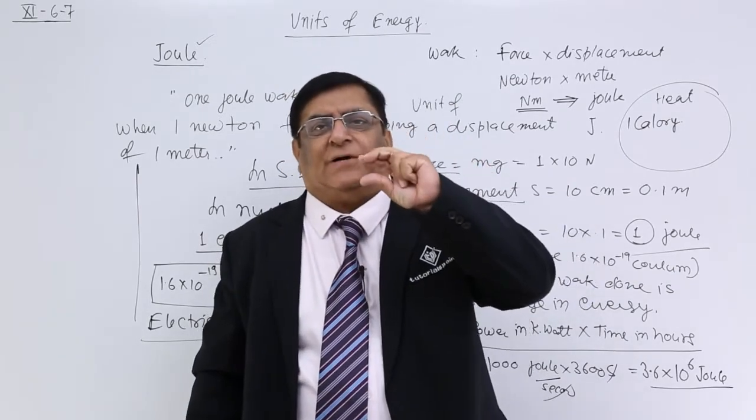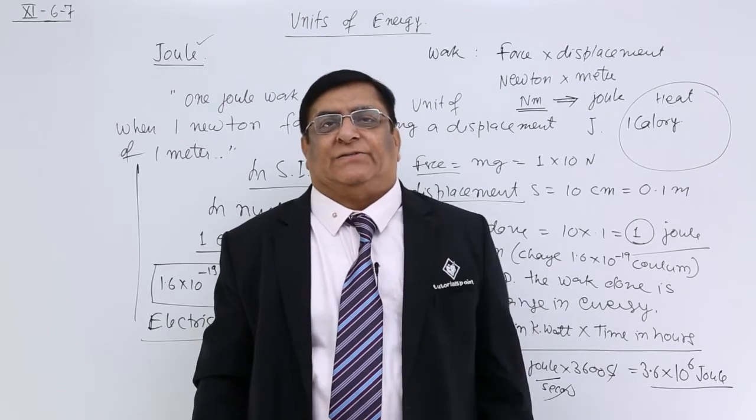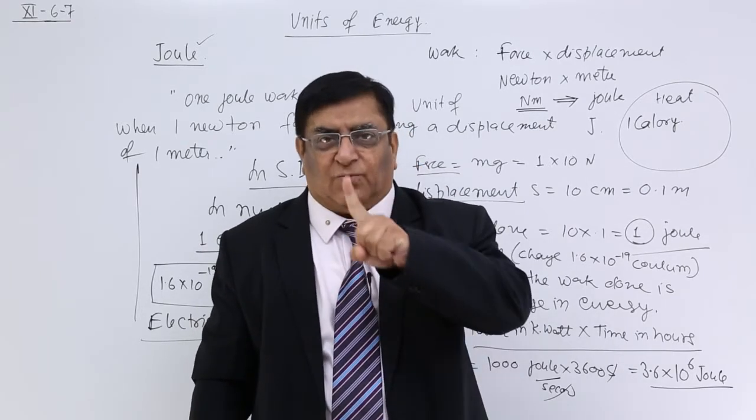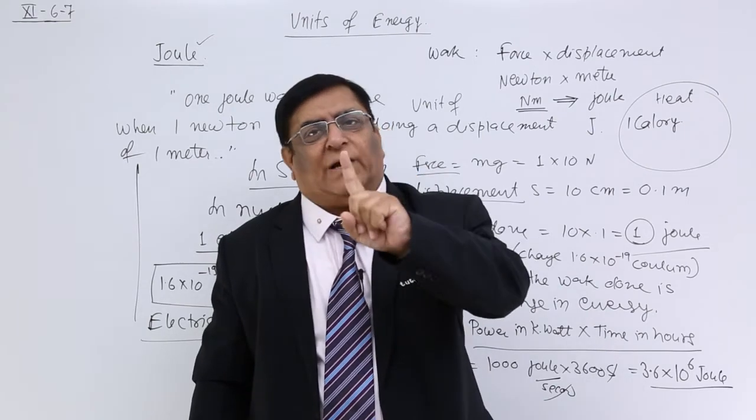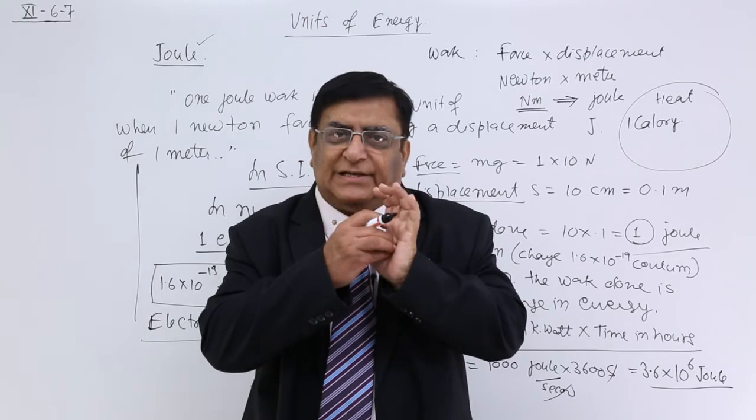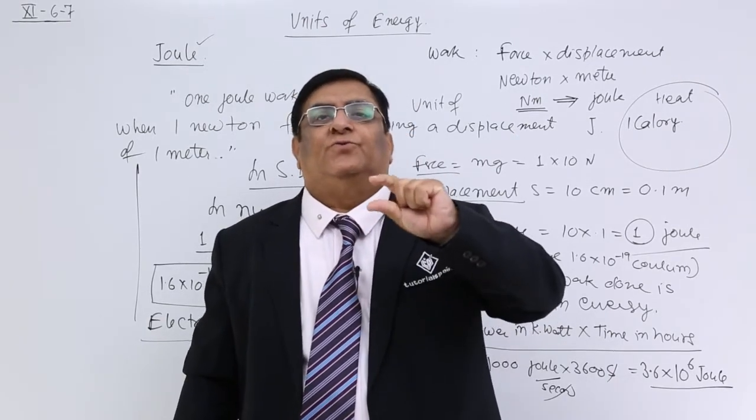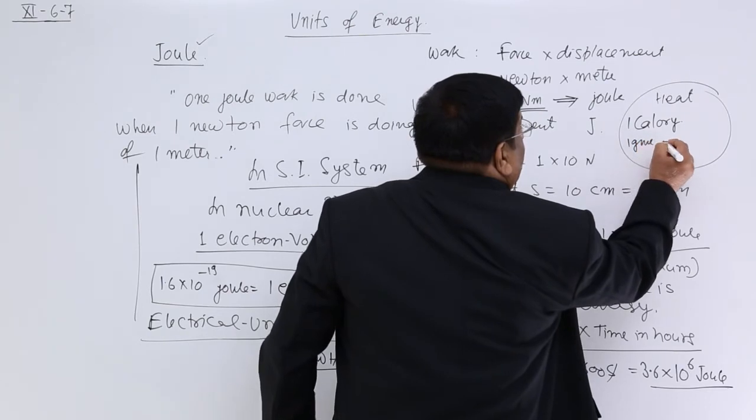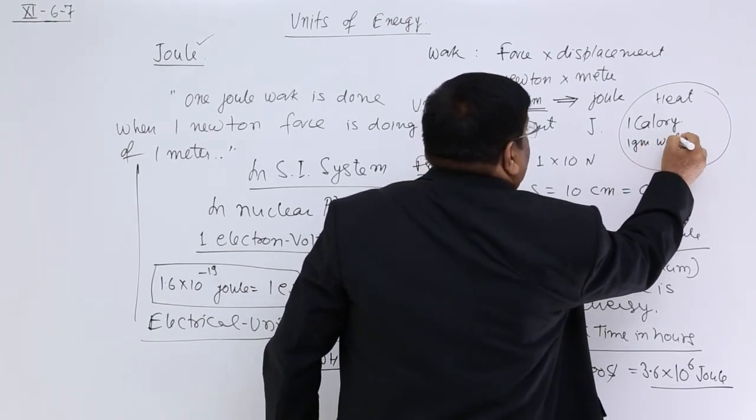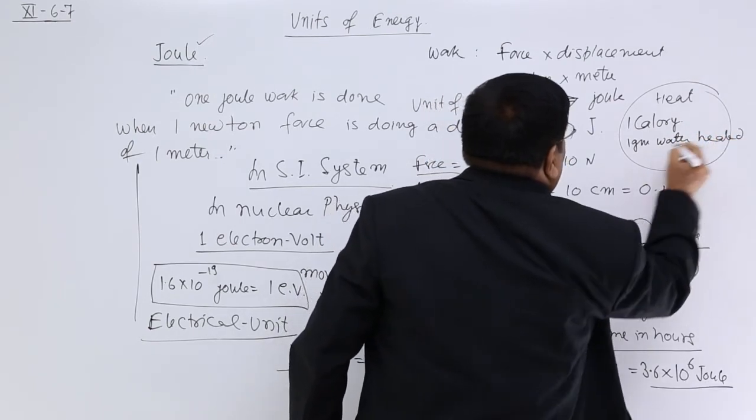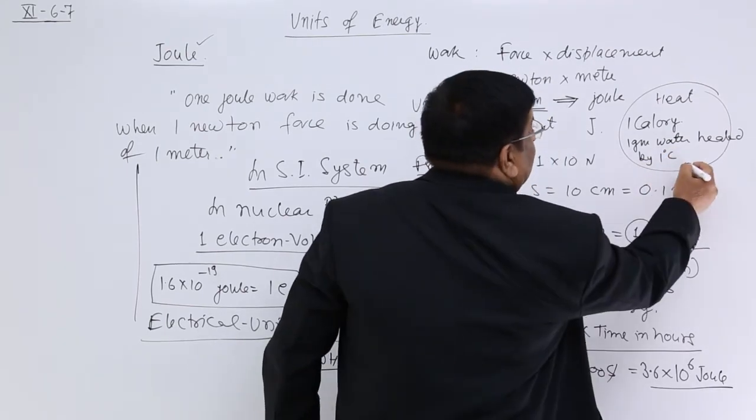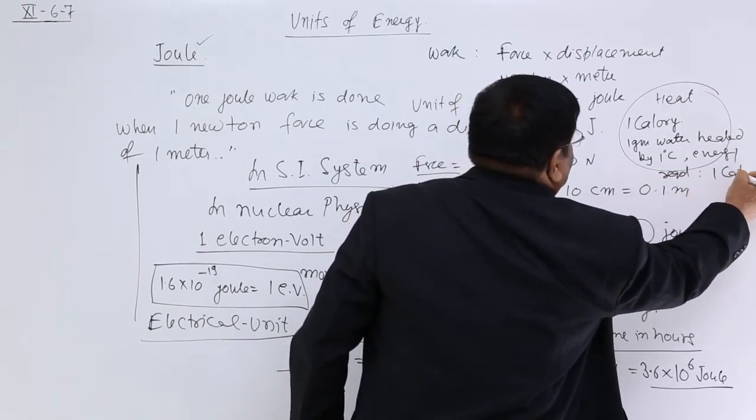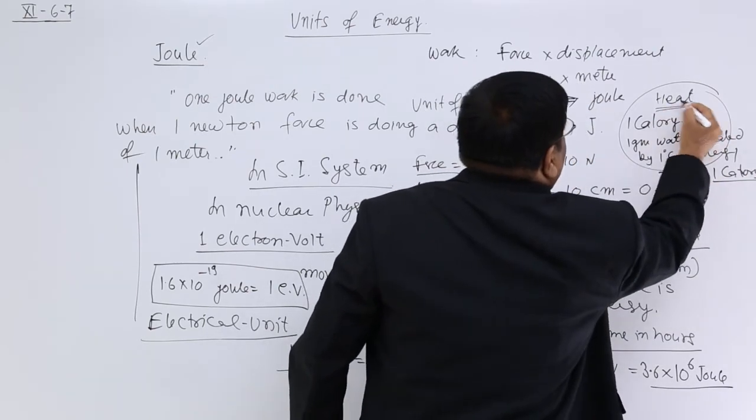Heat. That is 1 calorie. When we take 1 gram of water heated by 1 degree Celsius we have to give certain energy. Then its temperature will rise by 1 degree. How much is the water? 1 gram. How much temperature to be raised? 1 degree. How it is to be raised? We have to give certain heat energy. That energy is fixed to be 1 calorie. 1 gram water heated by 1 degree Celsius, energy required 1 calorie.